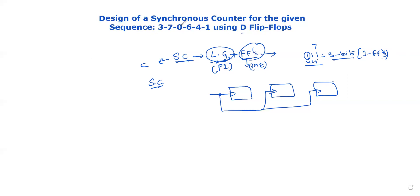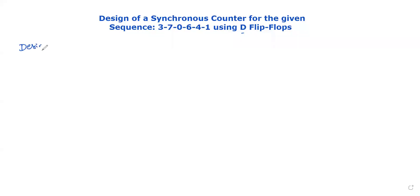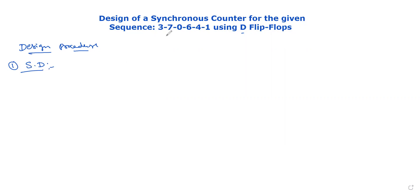First, we have to follow the design procedure. In the design procedure, the first step is to draw the state diagram. The state diagram represents the sequence in a circular format in terms of binary.